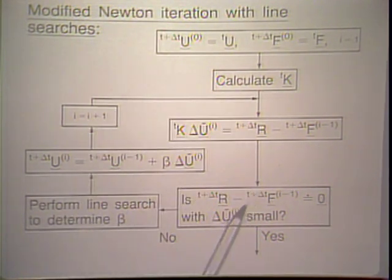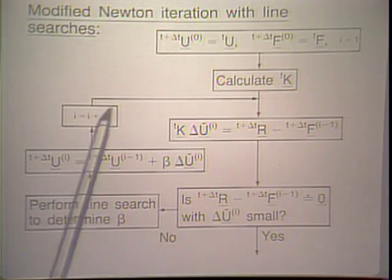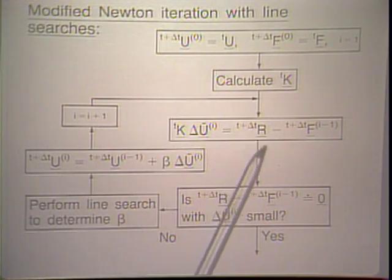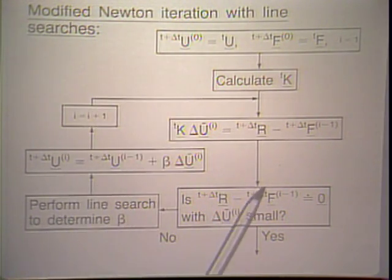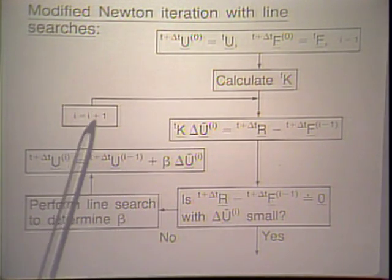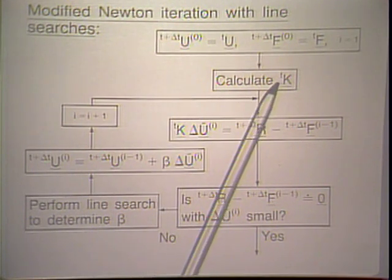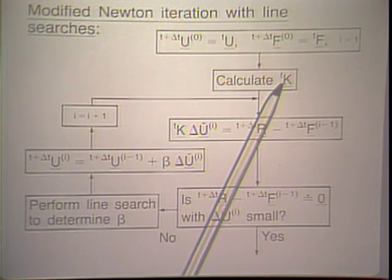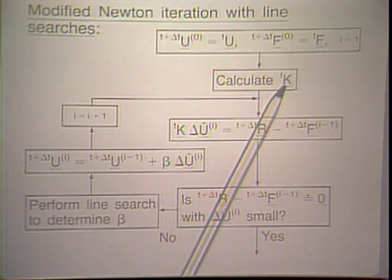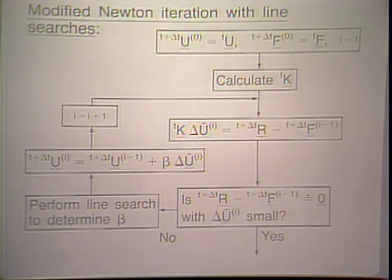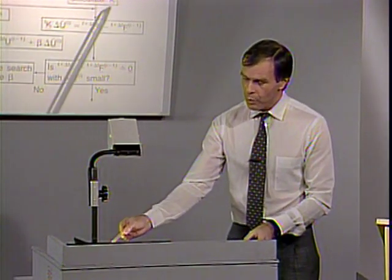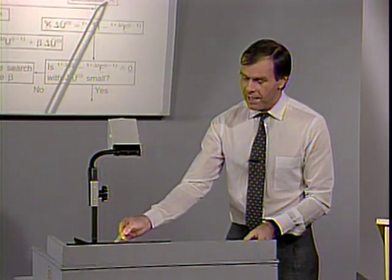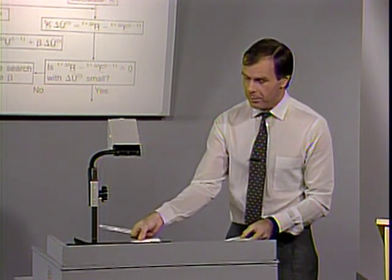Having calculated the incremental displacement vector with the bar, we perform a line search to update our displacements corresponding to iteration i. We then increment the iteration counter and go into the second iteration. The distinguishing feature of the modified Newton iteration is having a constant K matrix — we do not update it in the iterative loop. In the initial stress method, we would not even update K after the first calculation; but in the modified Newton iteration, we update it at the beginning of each load step.